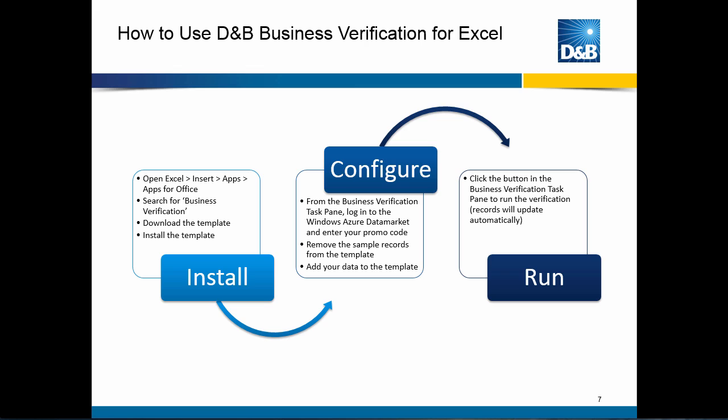Let's talk about the specific steps to get and use D&B Business Verification for Excel. Basically there are three parts: install it, configure it, and run it. The version we're going to work with includes a promo code so you can try it out for free with 100 records. To install: open Excel 2013, go to the Insert section, Apps for Office, search for Business Verification, find the D&B service, download the template, and install it. To configure: click the button on Apps for Office to open the Business Verification task pane, log into the Windows Azure Data Market, enter your promo code, then remove the sample records and put your own information in. Then just click the Run button in the task pane.